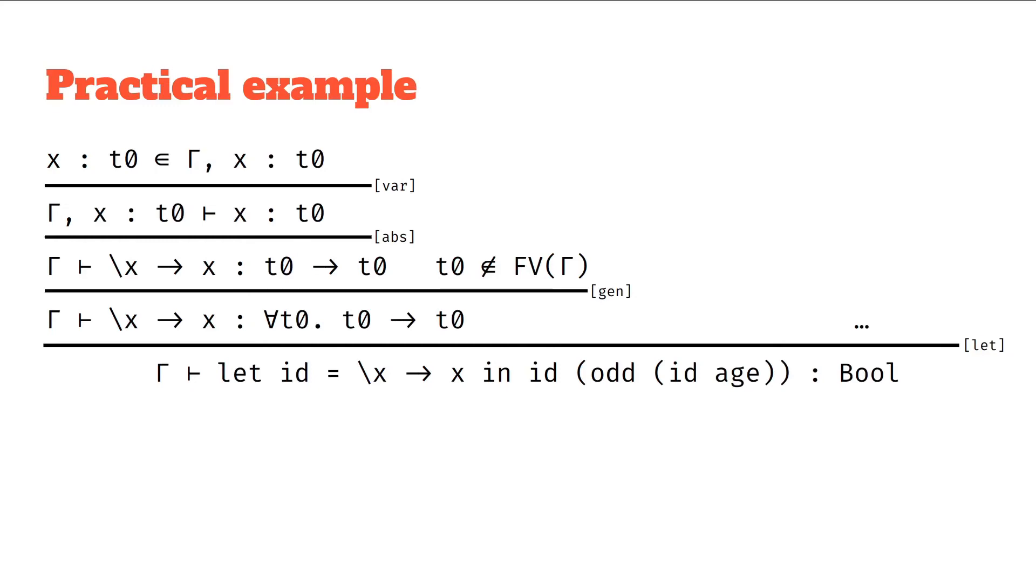You'll find that while we've applied id to age, so the t0 has to match with the int, and we've also applied it to the result of odd id age, which is a bool, but then t0 has to unify with bool as well, and so it doesn't quite work.